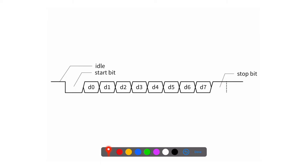UART also allows sending a parity bit after the data word. The parity bit is a form of error correction. The transmitter computes an even or odd parity — for example, with odd parity, if the number of ones is already odd, the parity bit is set to zero. The receiver checks the parity and if there's a discrepancy, it knows an error occurred. We won't use parity in our examples, but it is part of the standard.